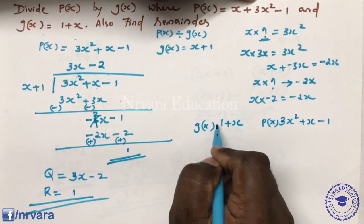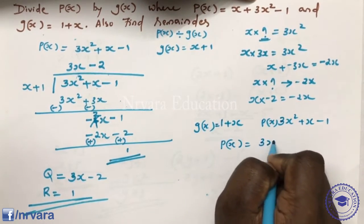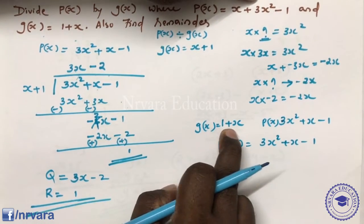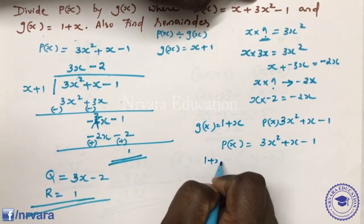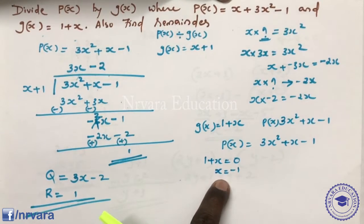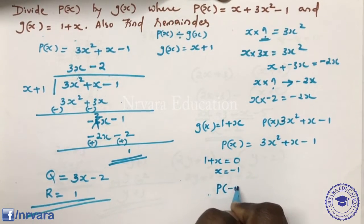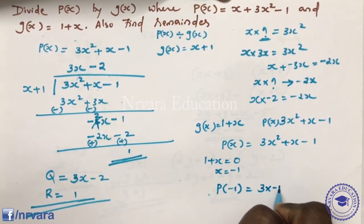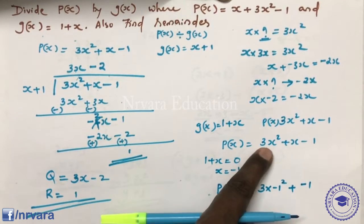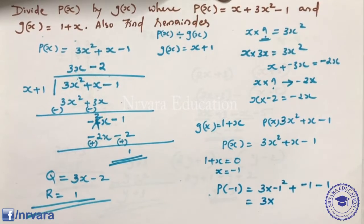P of x by G of x — we need to find the remainder. Instead of dividing, we substitute the value. G of x is 1 plus x, so x equals minus 1. We evaluate P of minus 1: 3 into minus 1 squared plus minus 1 minus 1. That is 3 into 1 minus 1 minus 1.